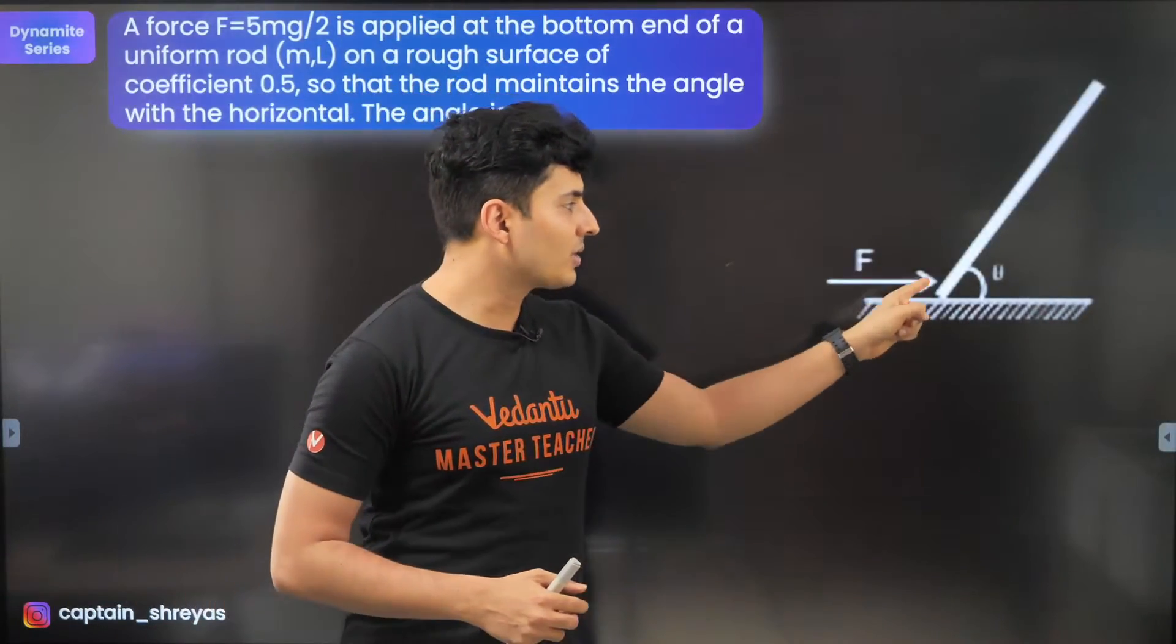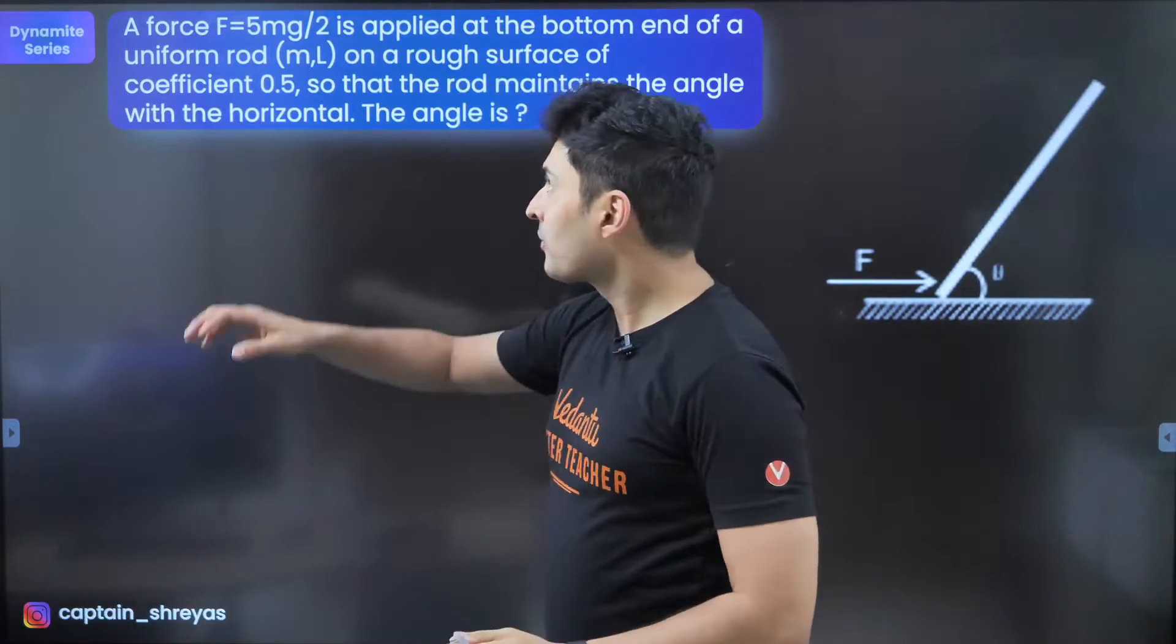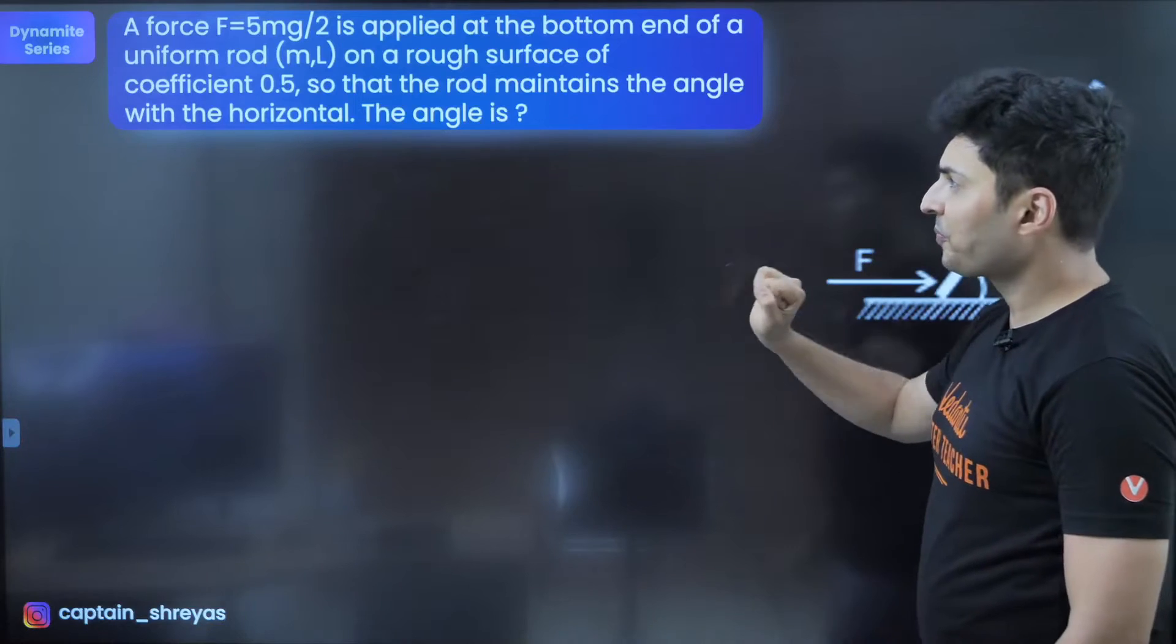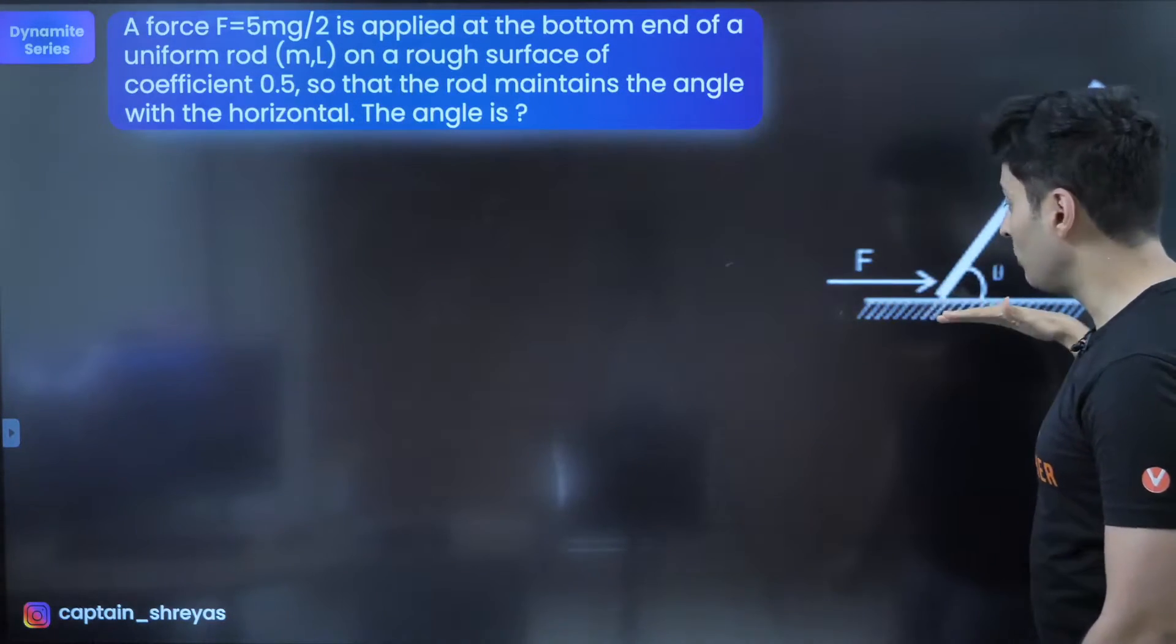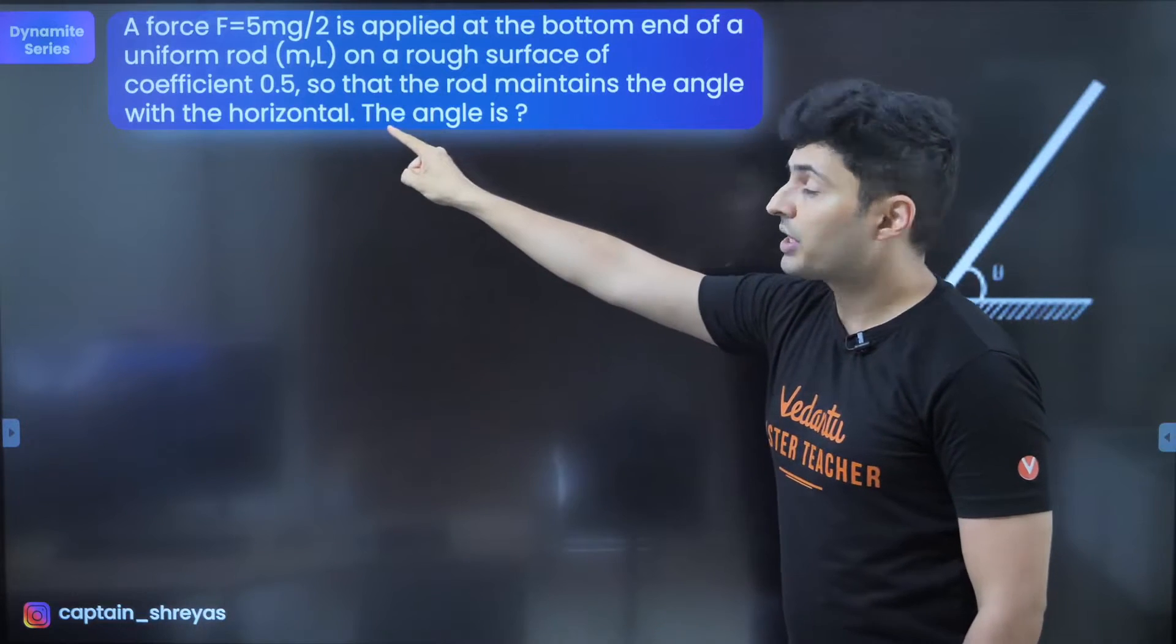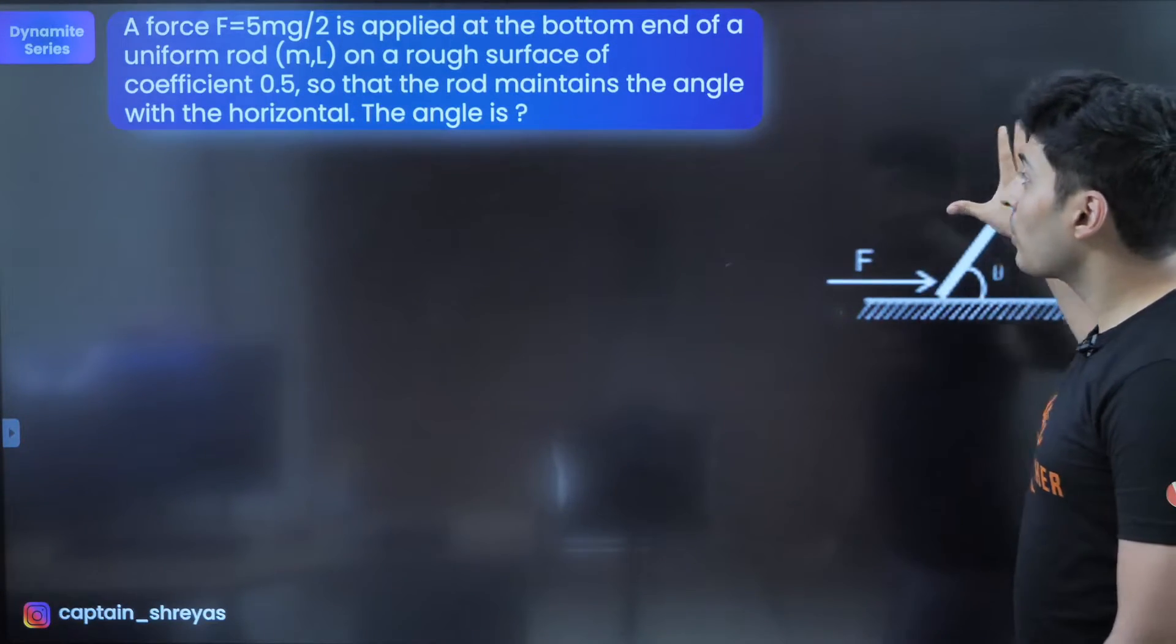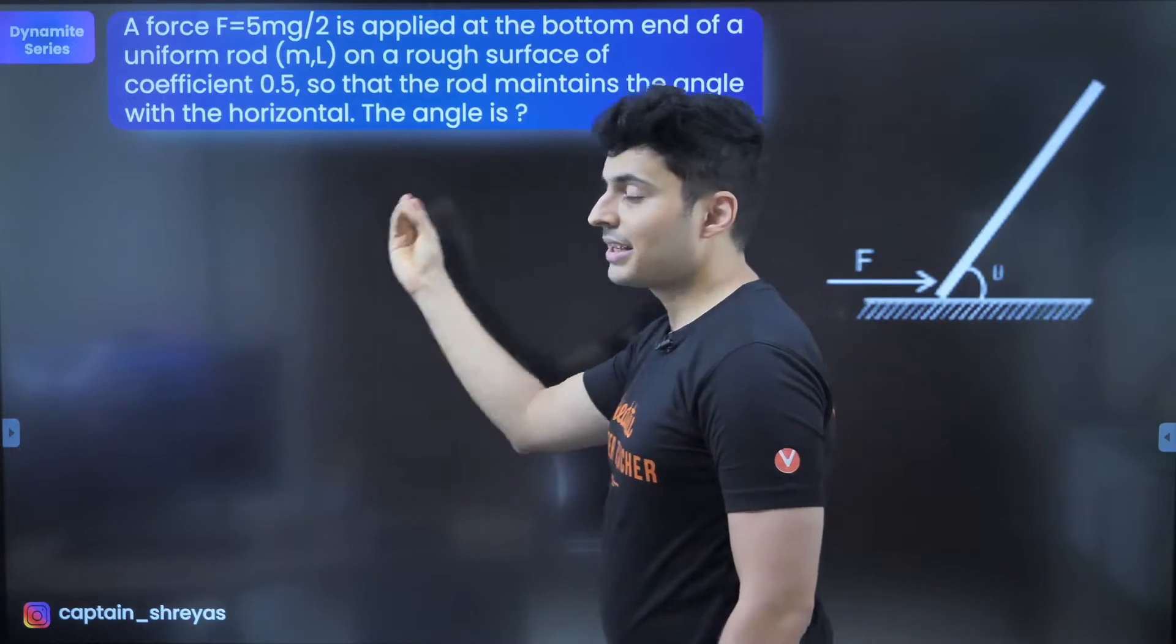You can see there is a force acting on this rod, which is making certain angle theta. This force is 5mg by 2, applied at the bottom. The rod is uniform, the surface is rough, the bottom surface has coefficient of friction 0.5. And the question is, if the rod maintains the angle with the horizontal, then how much do you think the angle is?